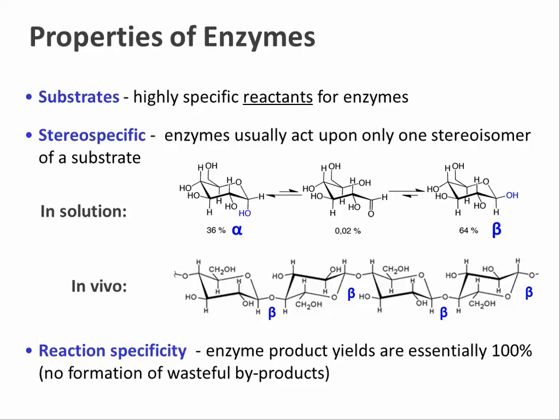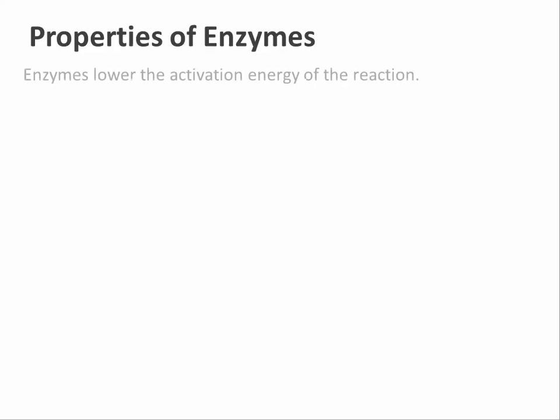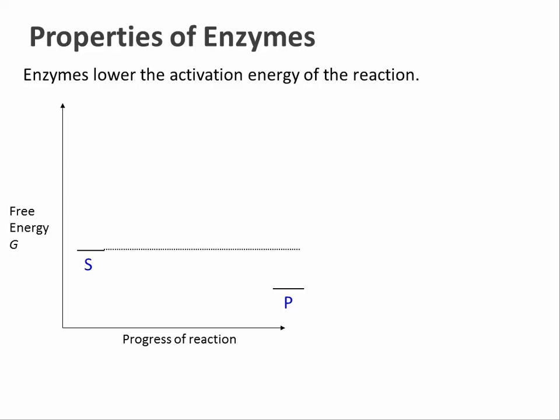So how do enzymes accelerate a chemical reaction? As we're going to see, enzymes lower the activation energy of the reaction. This diagram is a so-called energy diagram where the x-axis represents the reaction coordinate — that is, the progress from substrates to products — and the y-axis represents the overall energy, more specifically the Gibbs free energy, or G, of the molecules at any one time.